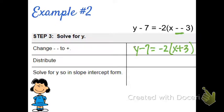Now I can distribute, because I'm trying to solve for my y. So I have my y minus 7 still, but when I distribute, negative 2 times x is negative 2x, and negative 2 times positive 3 is negative 6.